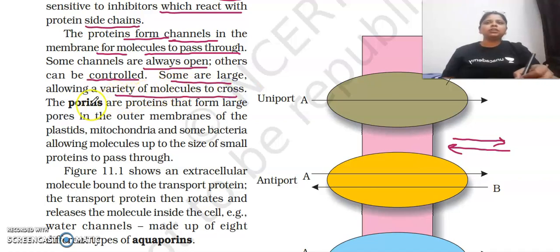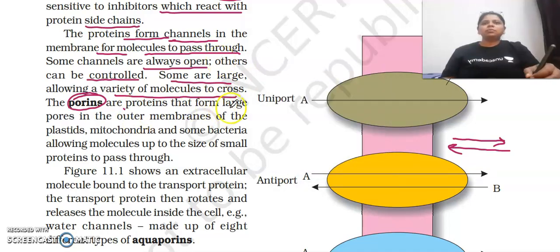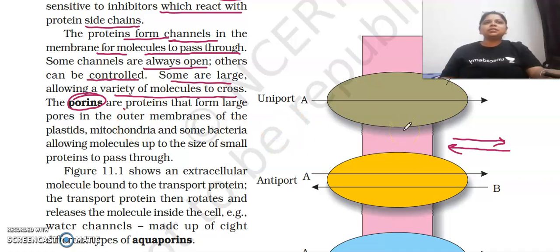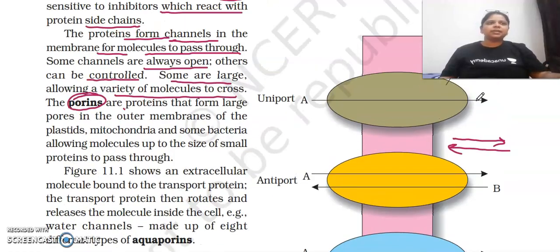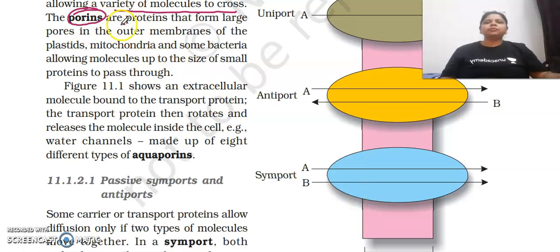Proteins that form channels are known as porins. These are proteins that form large pores in the outer membrane of plastids, mitochondria, and bacteria, which allow molecules to pass through up to the size of a small protein. In the figure you can see that uniport goes in a single direction, antiport goes in the opposite direction, and symport moves molecules together in the same direction.